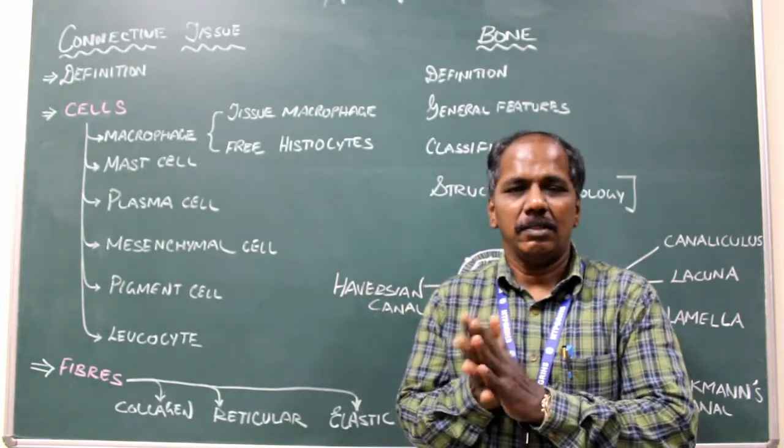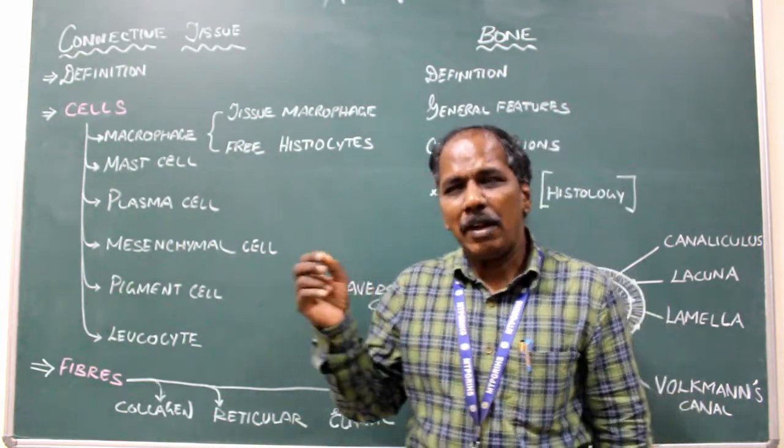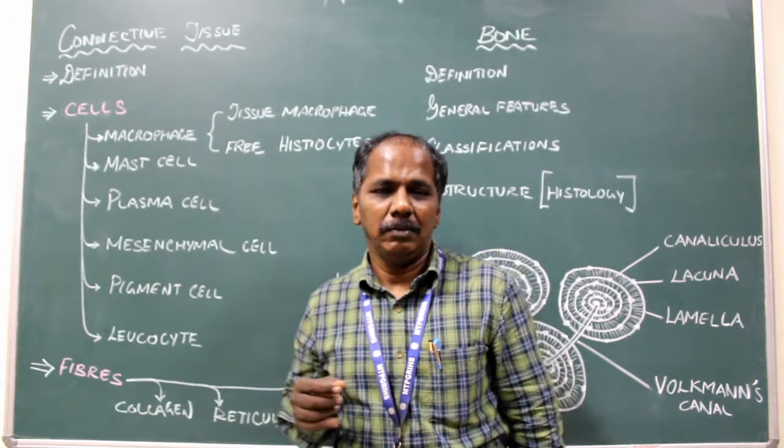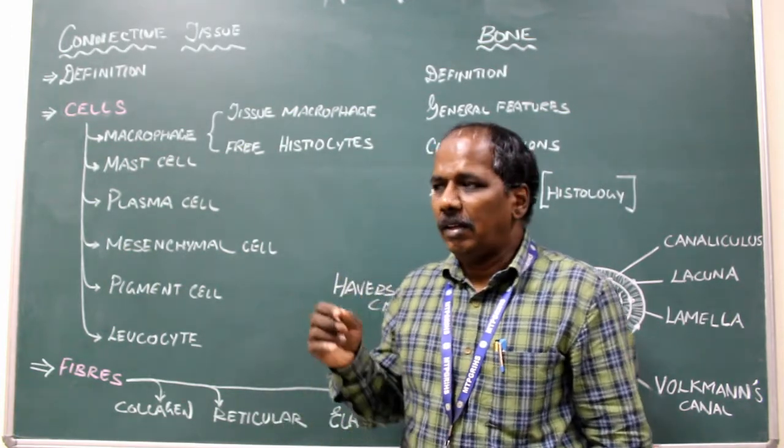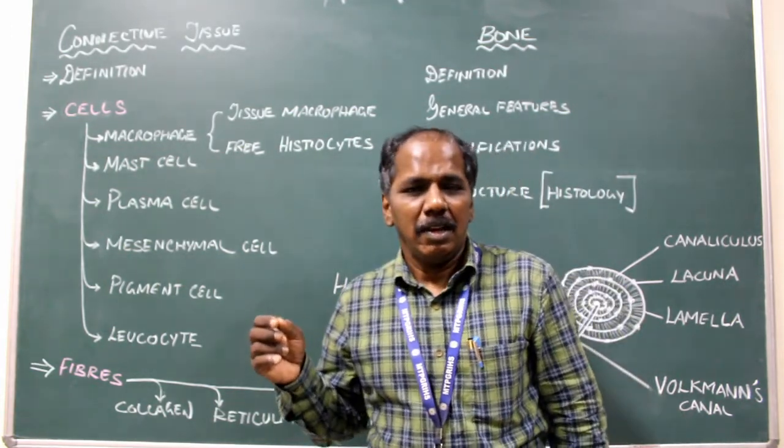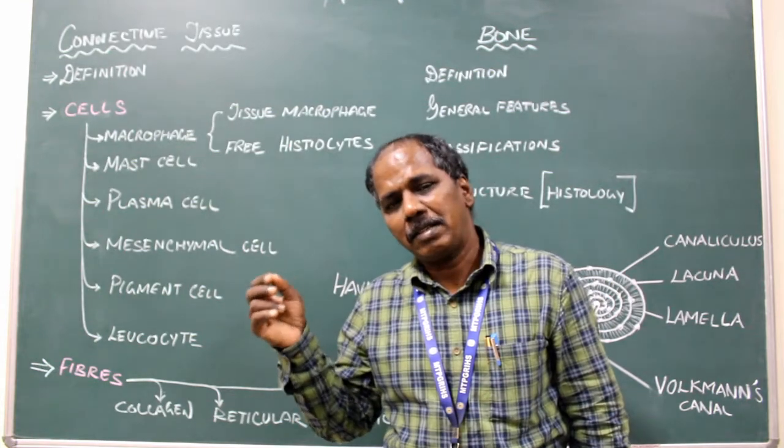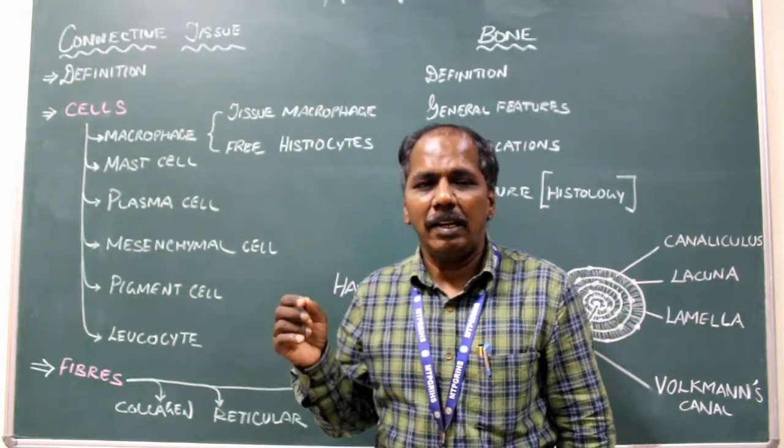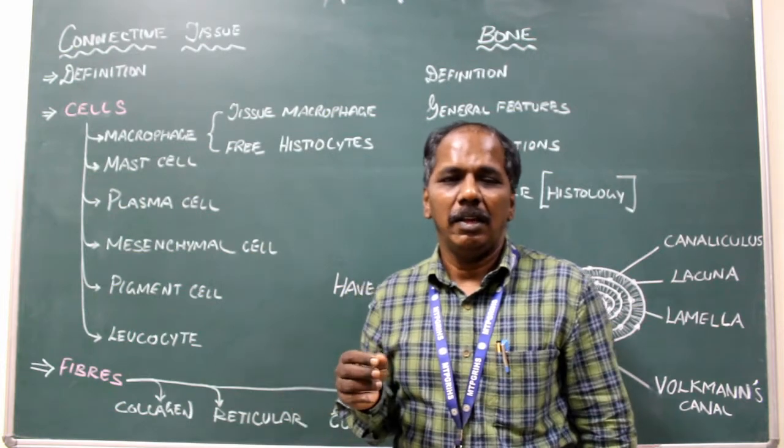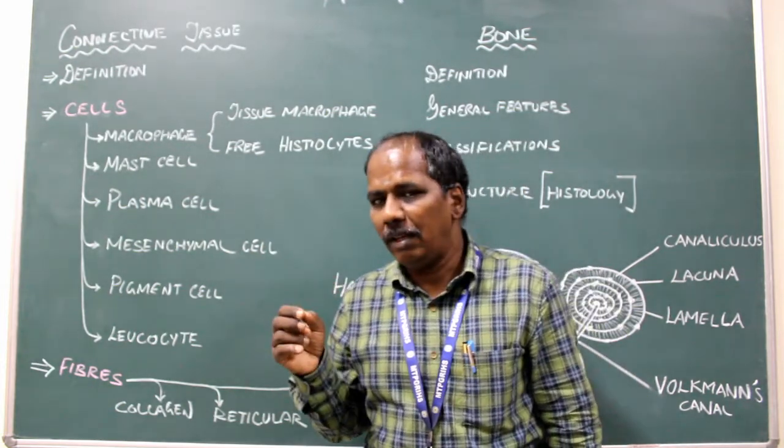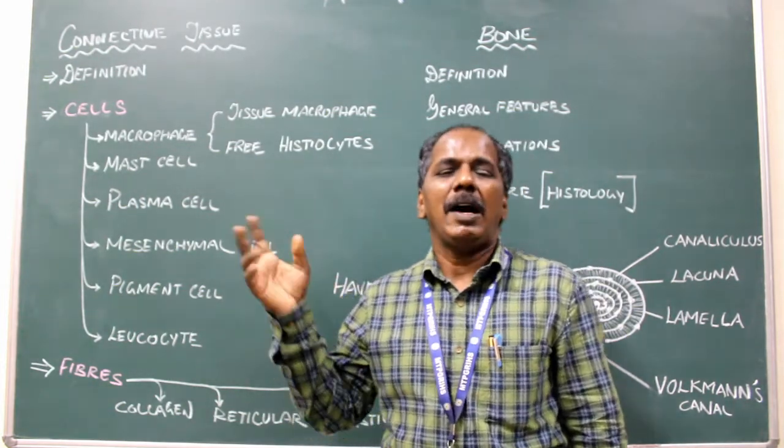General features: It is derived from mesoderm. It is highly rich in blood supply except for cartilage and tendon. It has a rich nerve supply except for cartilage.